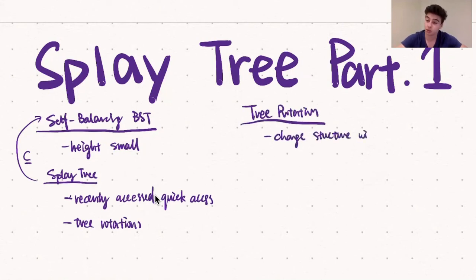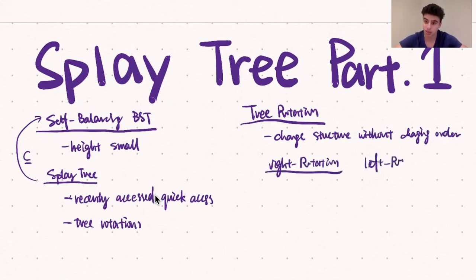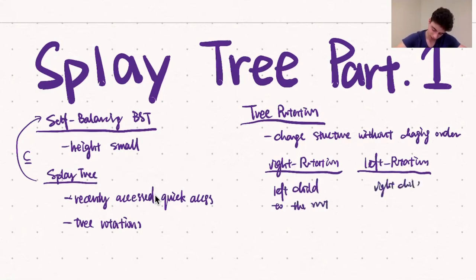There are two types of rotations to talk about. The first one is the right rotation and the second is the left rotation. The right rotation brings the current root's left child to the root of the tree, and a left rotation brings the current root's right child to the root of the tree. Now let's give an example of what it would look like on a real tree.